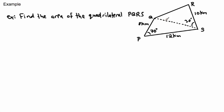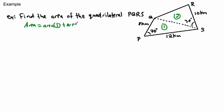To find the area of this odd shape, we split it into two triangles using a dotted line. We call these Area 1 and Area 2. The total area will just be Area 1 plus Area 2 — so if we can find each triangle's area and add them, we're done.